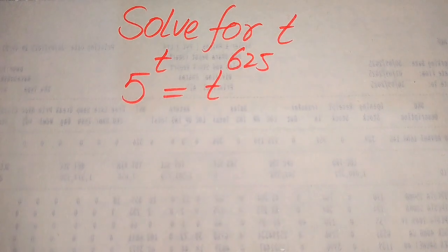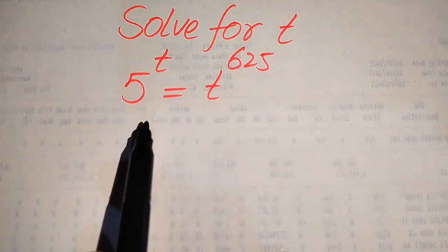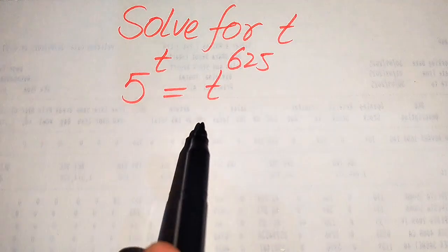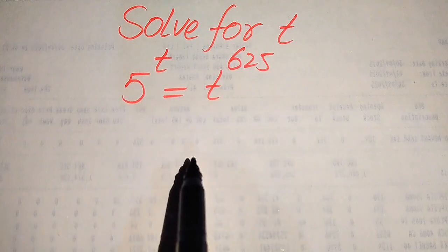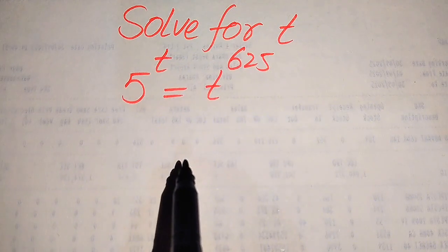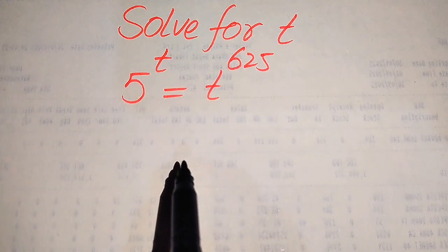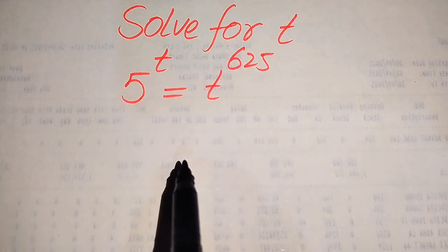Hello everyone. How to solve this problem for the values of t if we have 5 to the power of t is equal to t to the power of 625, and we solve this problem for all the values of t. First we need to find all the roots of this equation, and at the last we will verify which of the roots are solutions and which of the roots are extraneous roots.